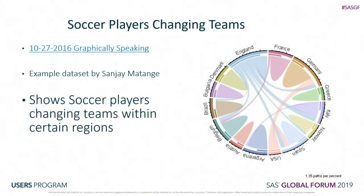For a soccer example, I found this data in one of Sanjay Matange's Graphically Speaking blog posts. It shows soccer players changing teams across regions or countries. While not quantitative, it gives fun information—for example, nobody's going to the US to play soccer, a lot of people are leaving England to play elsewhere, a lot of people from other countries are going to Spain, and the majority of other countries are pretty well balanced between players leaving and arriving.